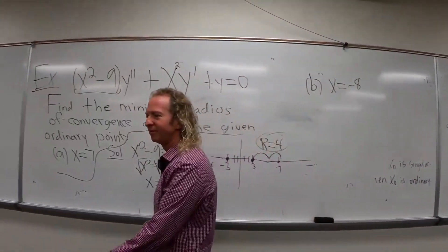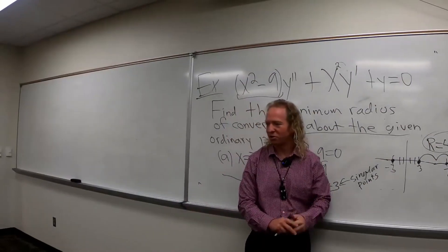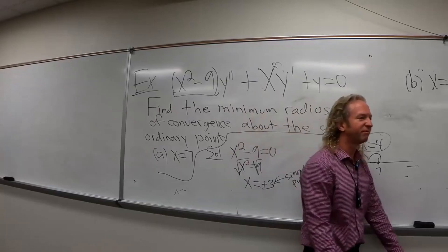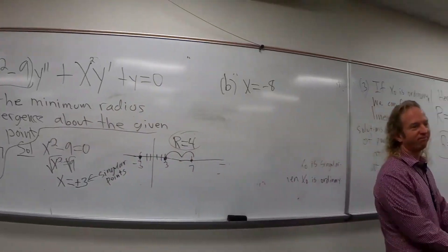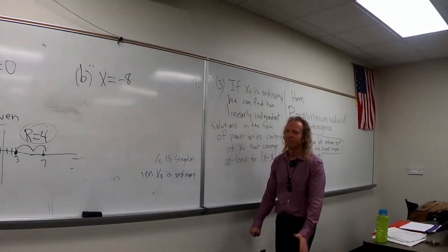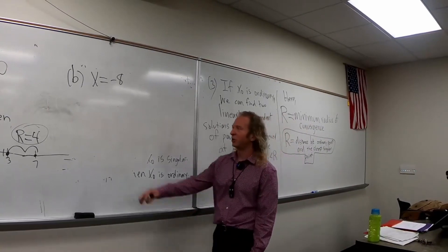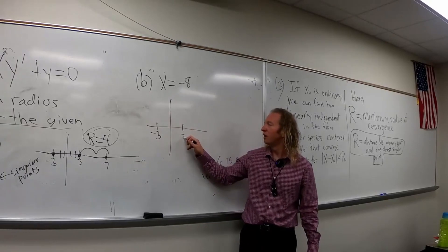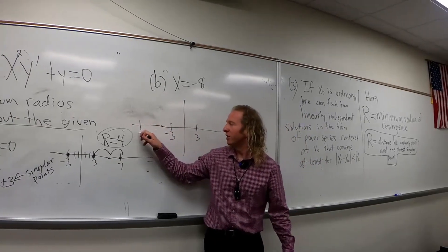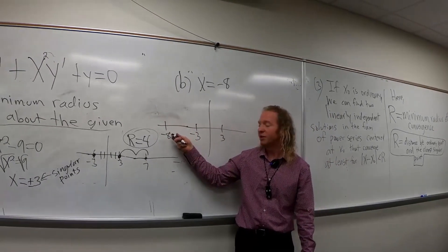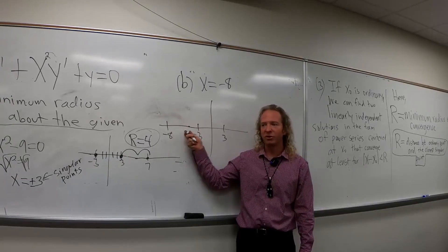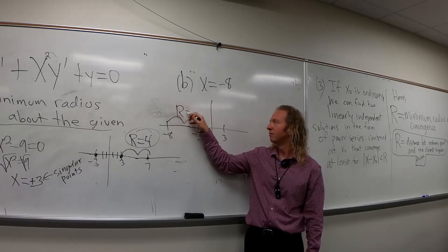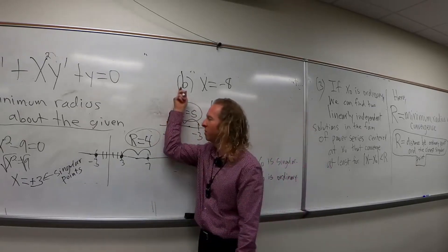Do you see why it's five? Try to do it — draw a picture, plot your singular points, plot your ordinary point, and see if you can find it. So here's negative three, here's three, and negative eight is over here. The distance between your ordinary point and your closest singular point is five. We're using the exact same problem — it's just part B.